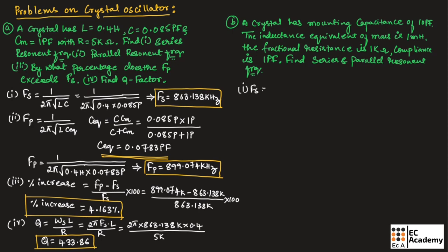Let us find the series resonant frequency, equal to 1 divided by 2 pi square root of L into C. Substituting the values, it will be 1 divided by 2 pi square root of 1 millihenry multiplied with 1 picofarad. Solving this, we get the series resonant frequency as 5.033 megahertz.